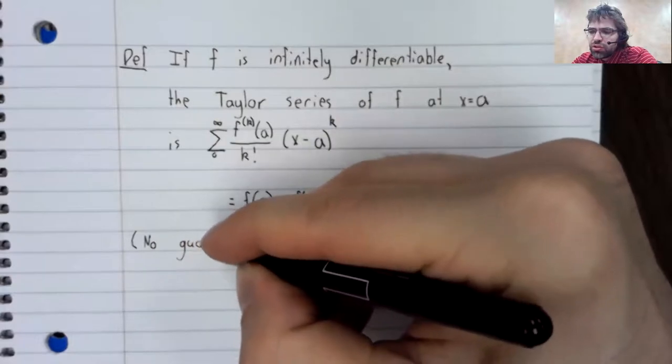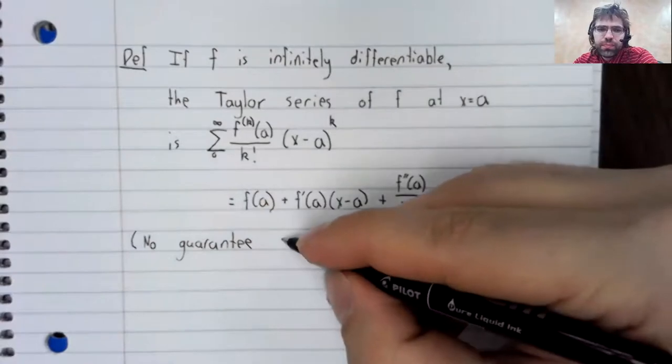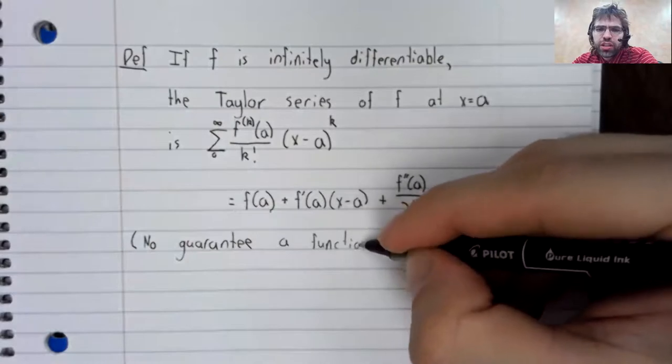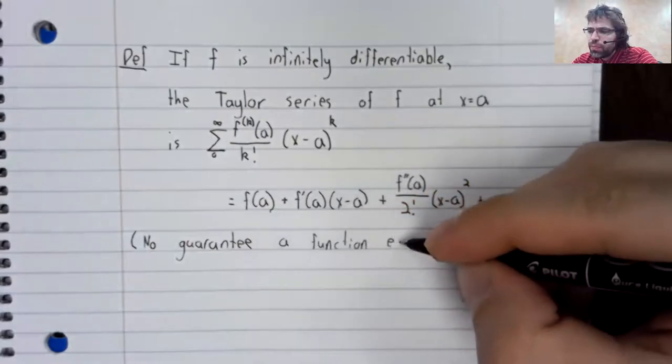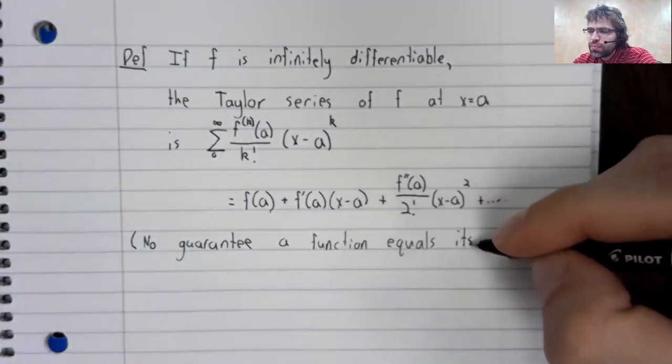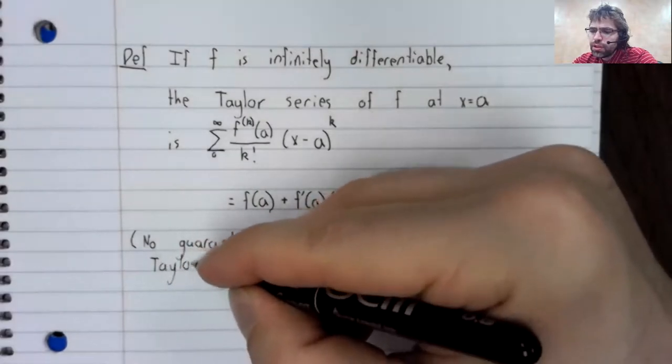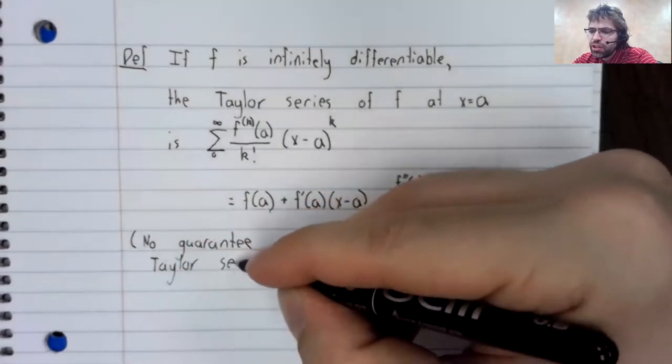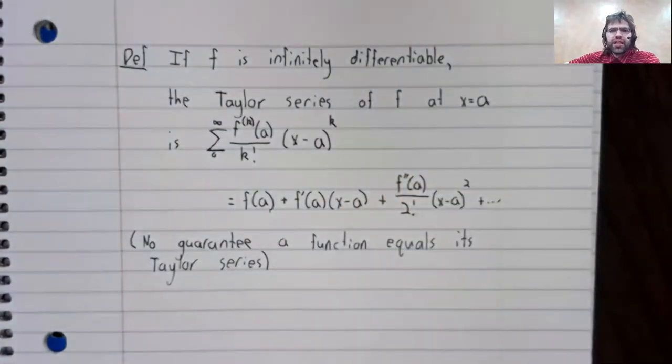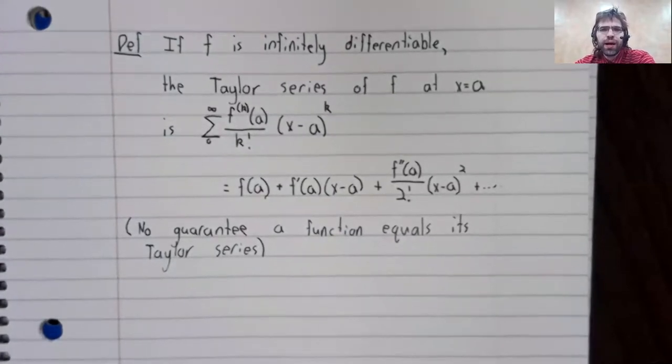That there is no guarantee that a function equals its Taylor series. And we'll see an example of a function that doesn't down the line.